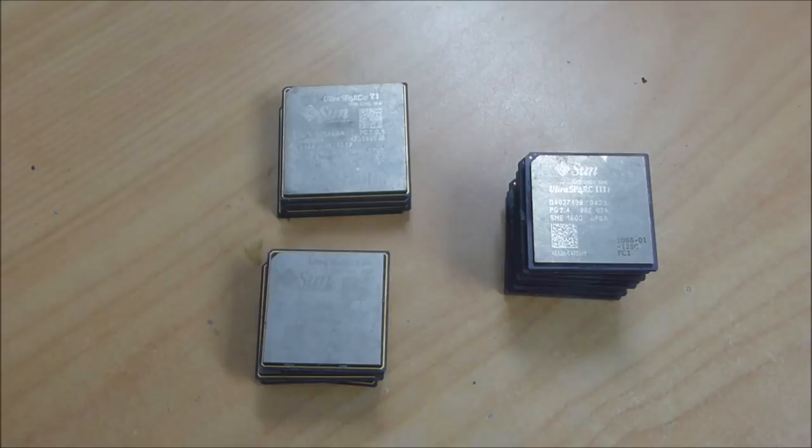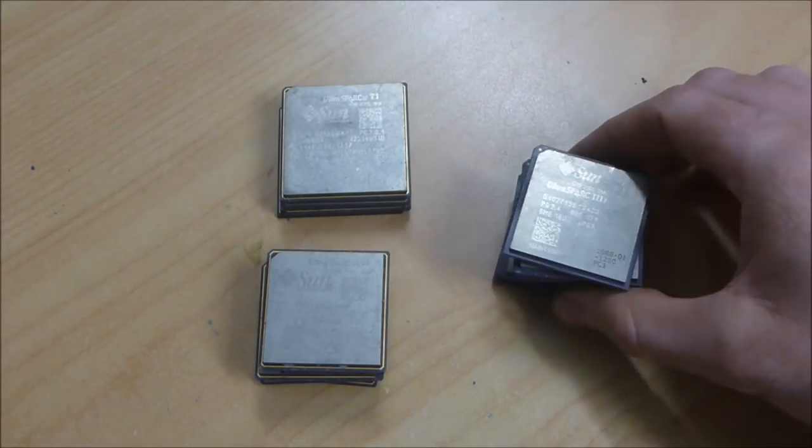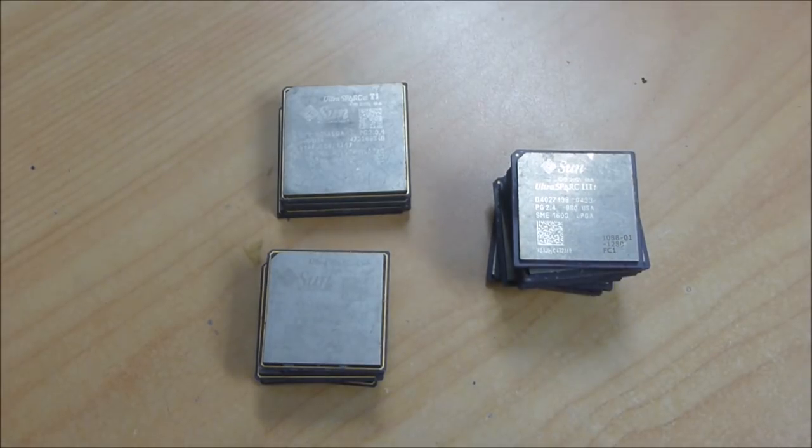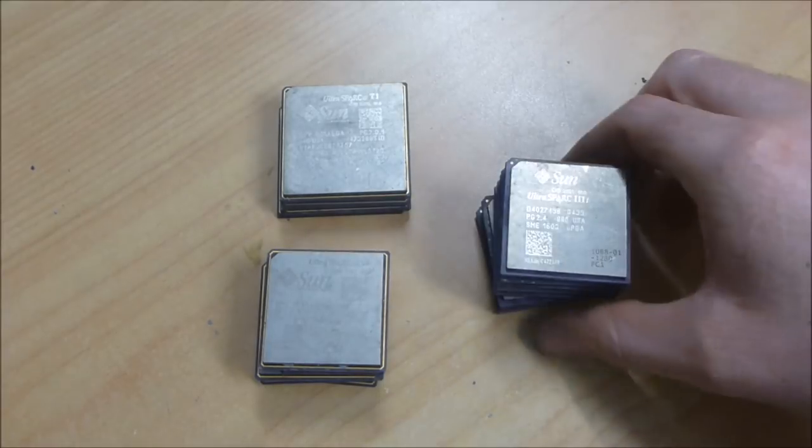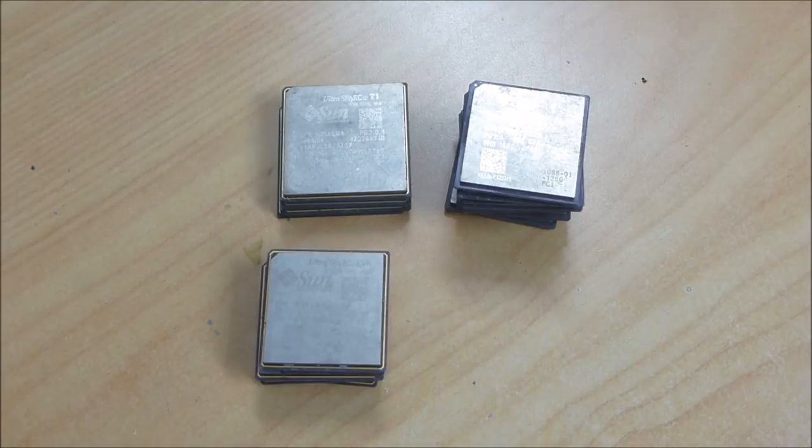This is one of the packages that arrived first and as you can see what we've got here is some of these ceramic Sun UltraSPARC processors. This was sent in by a viewer that preferred to be anonymous but was sent from Australia so they've traveled a little while for us to have a look at them.